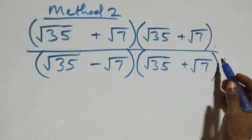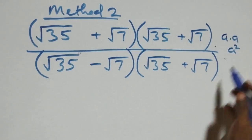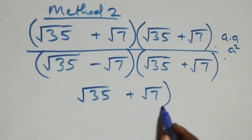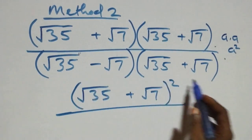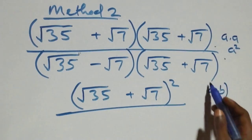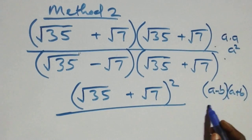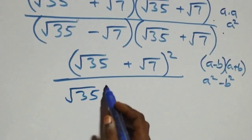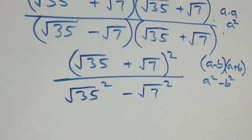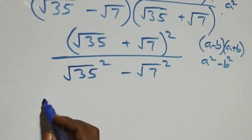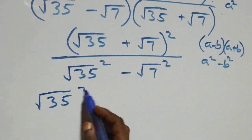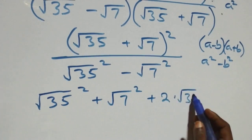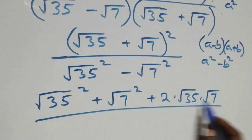From here we have root 35 — where we have a times a, the same thing as a squared. We can write the numerator as (root 35 plus root 7) all squared, divided by the difference of two squares: (a − b)(a + b) = a² − b². The expansion gives root 35 squared plus root 7 squared plus 2 times root 35 times root 7.